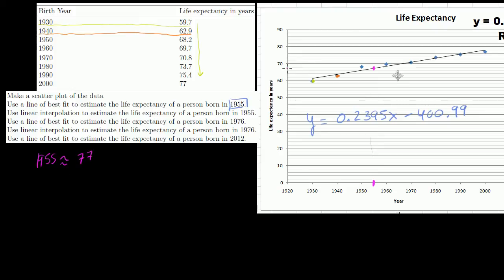1955, it looks roughly equal to 77, no, sorry, 67 years. Let me be clear. That sounded suspicious. A 67-year life expectancy.